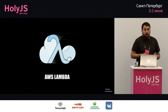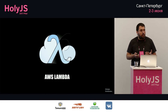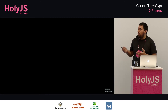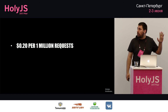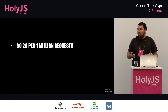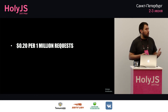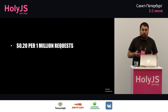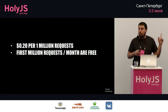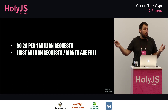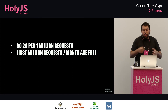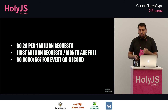AWS Lambda pricing: 20 cents for one million requests. A request is essentially an API call. They use 100 milliseconds of processing time as one request unit — so if your API call takes one second, it counts as 10 requests. But even then, 100,000 requests for 20 cents is really cheap. Also, the first million requests each month are free, so you can play around and build serious things while paying zero dollars.